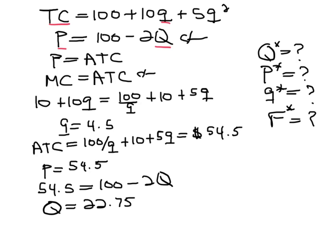So now we've found the market quantity, which is 22.75, the price, which is 54.5, and the small firm-level Q, which is 4.5.